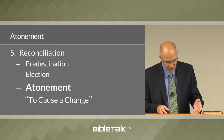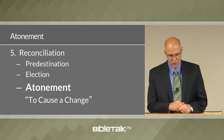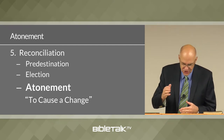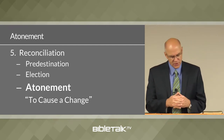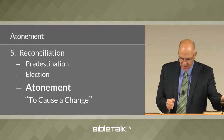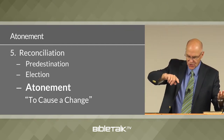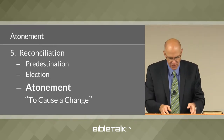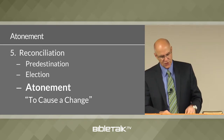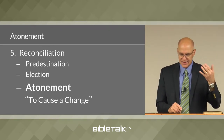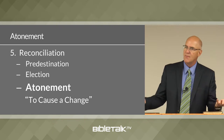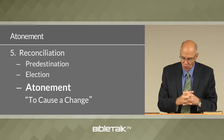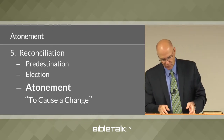The word atonement is an English word that comes from a Greek word meaning to reconcile, or to cause a change or exchange — a change on the part of one party induced by the action of another party. In the Bible, the doctrine of atonement refers to the death of Jesus Christ as the means by which God and man became reconciled and restored to a state of friendly relationship.